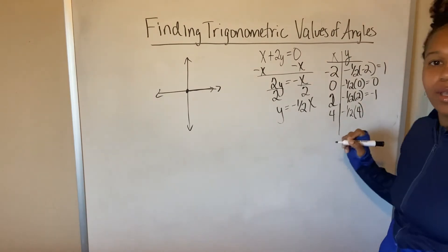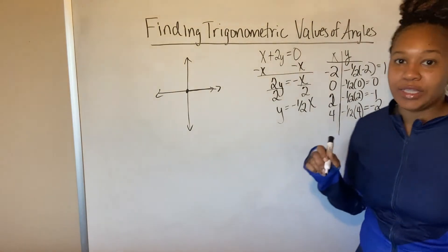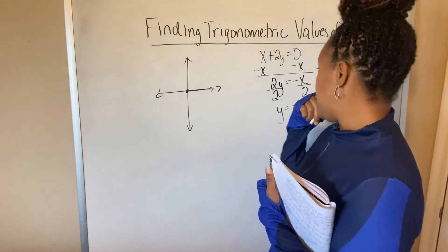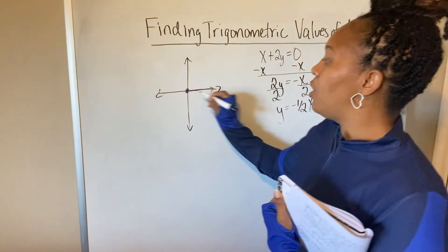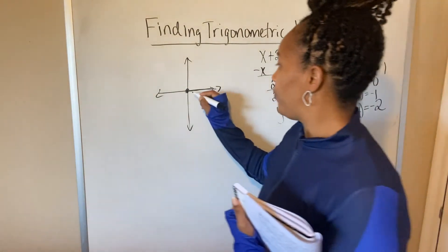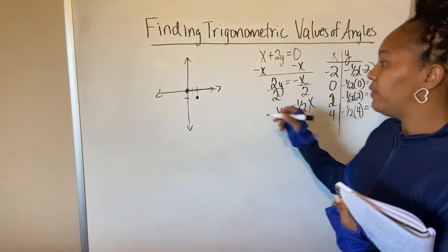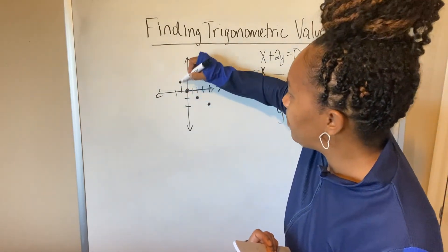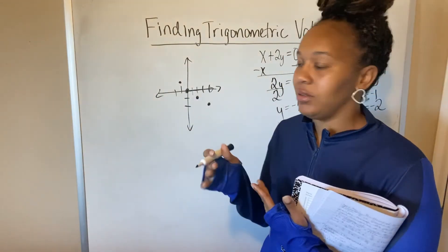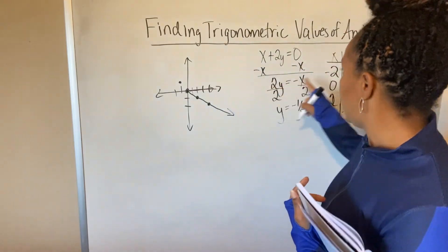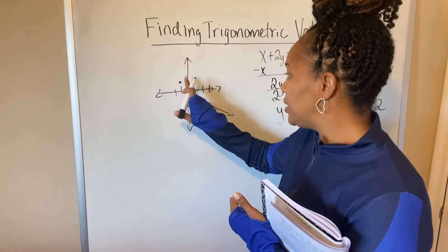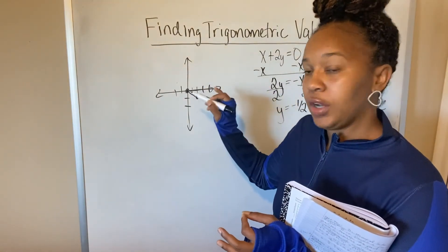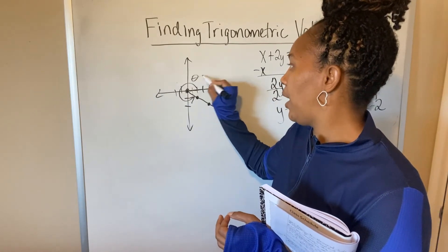If I plug in 4, I get negative one-half times 4, which is negative 2. So plotting these points: (0, 0) is the vertex, (2, -1) is a point here, and (4, -2) is the point here. The point (-2, 1) is over here, but since x must be positive, that point won't be considered — we cross it out. We only take the positive portion of the line. An angle in standard position starts at the initial side and stops at the terminal side, so this is the angle we're looking for.